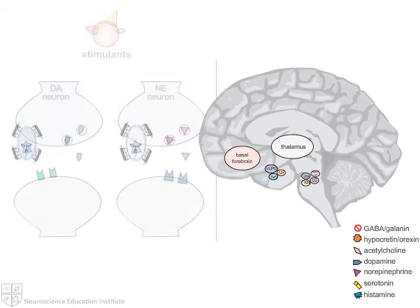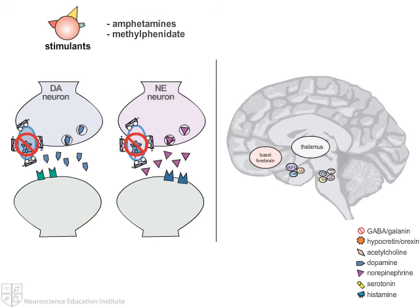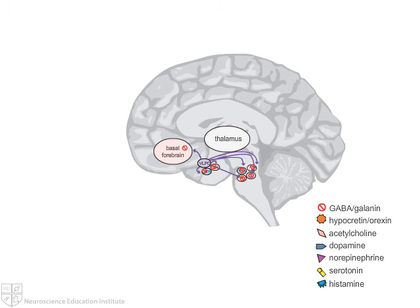Stimulants, including amphetamines and methylphenidate, act in part by inhibiting dopamine and/or norepinephrine reuptake transporters, thus increasing the levels of dopamine and norepinephrine in the wake circuit. Atomoxetine has a similar mechanism of action involving inhibition of norepinephrine reuptake.